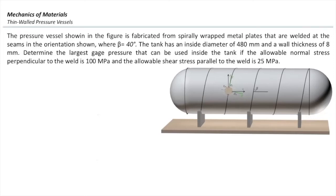The pressure vessel shown in this figure is fabricated from spirally wrapped metal plates that are welded at the seams in the orientation shown. Beta is assumed to be 40 degrees.